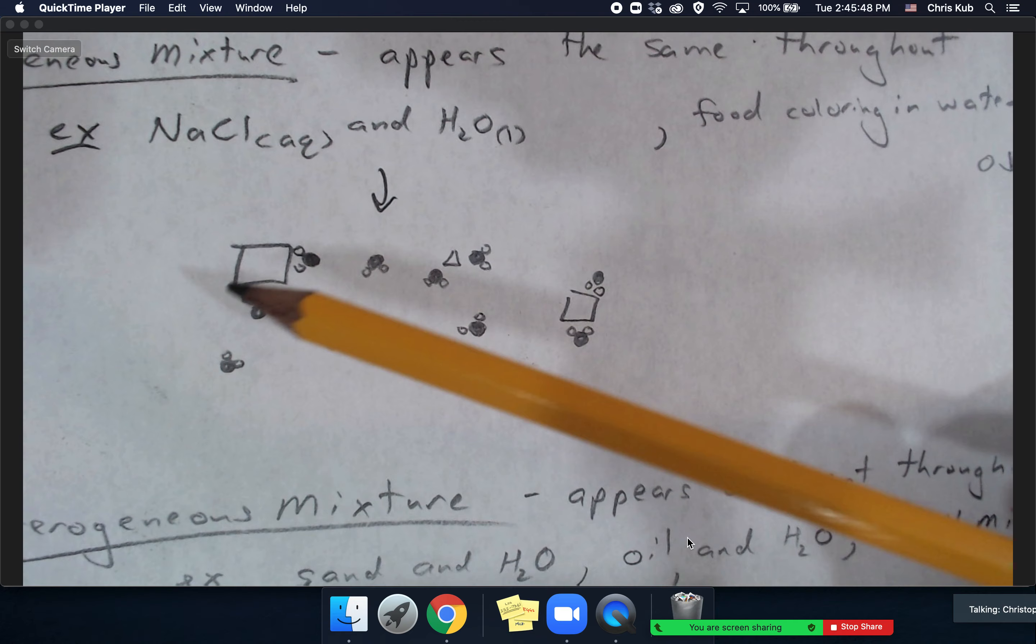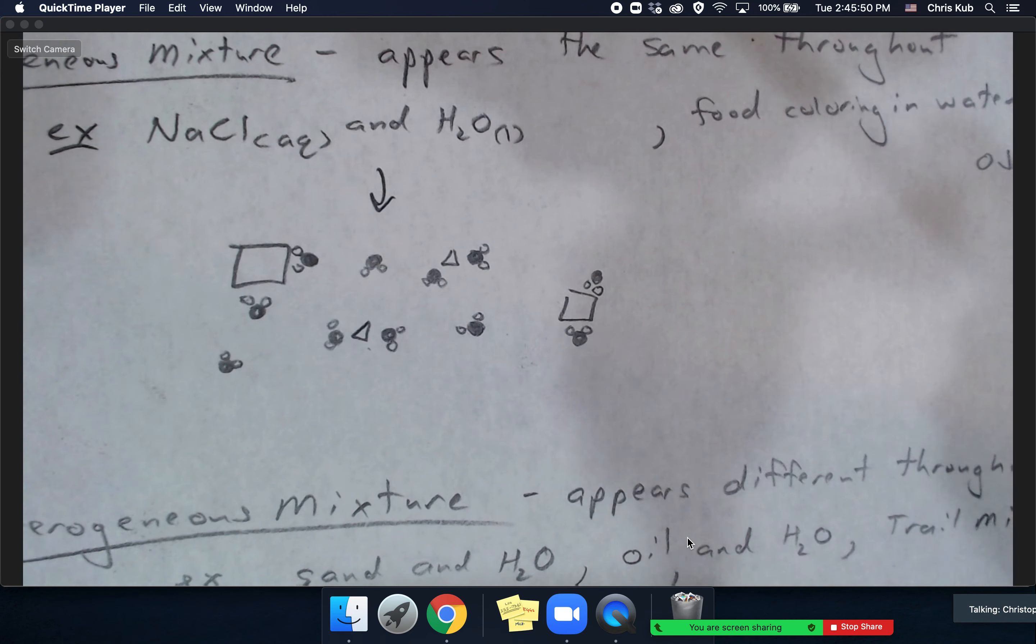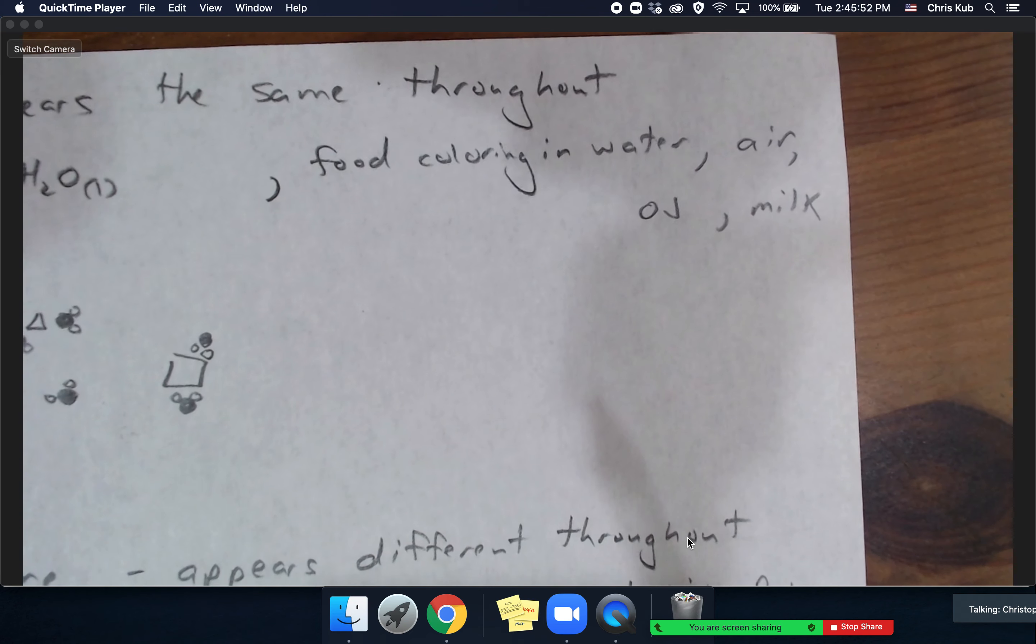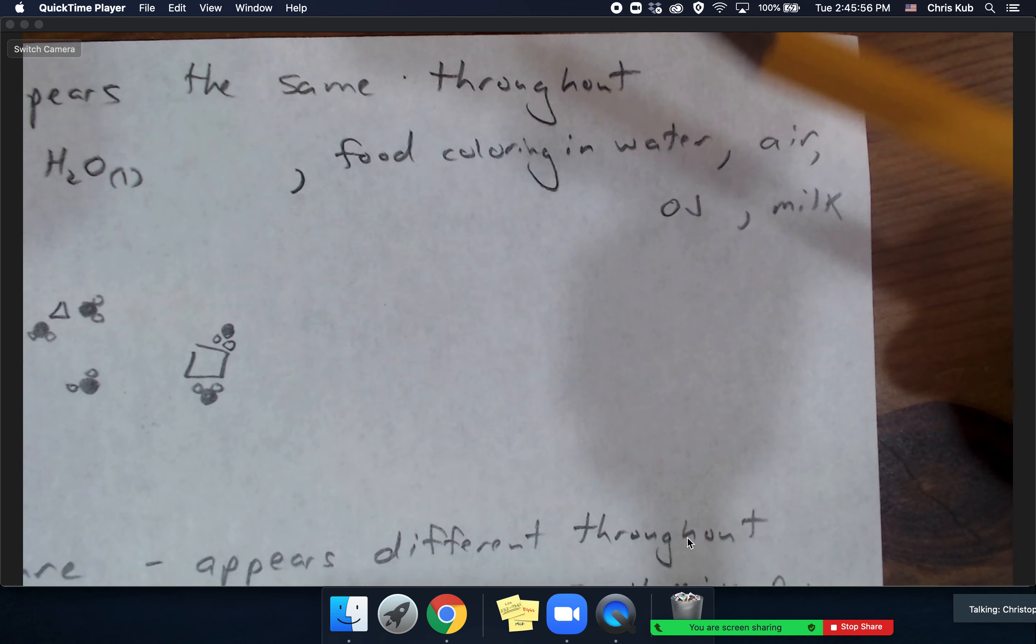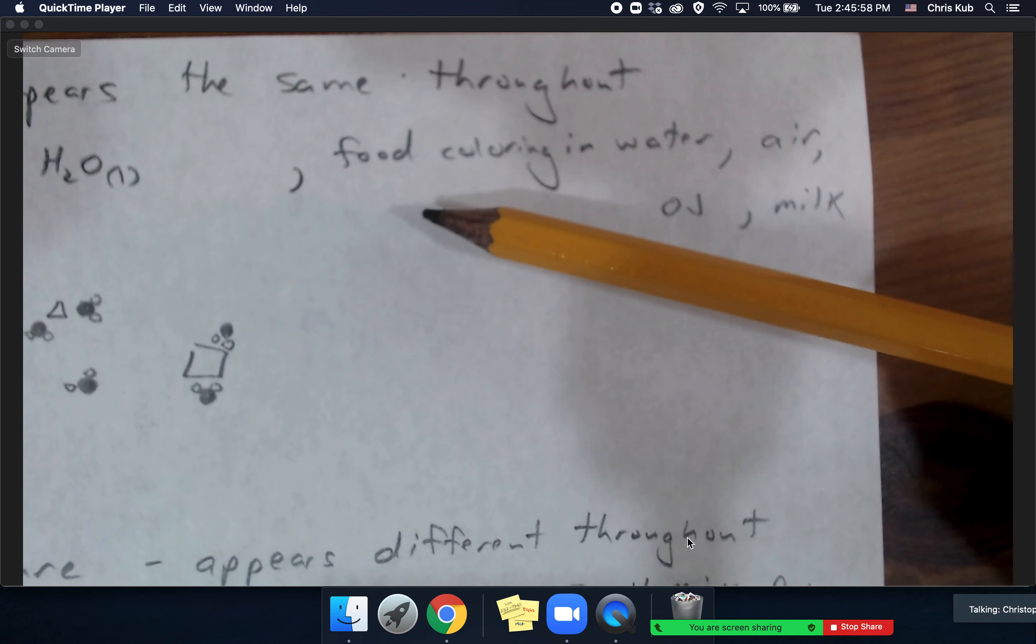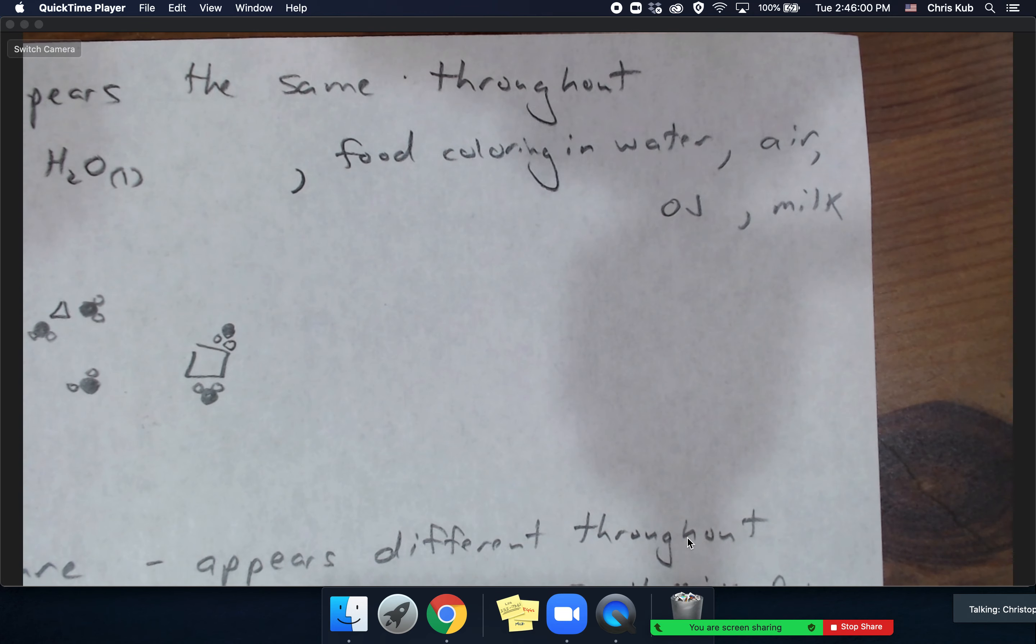Similarly, what else might be homogeneous? What else might look the same throughout the whole mixture? Food coloring dissolved in water, air looks the same everywhere even though it may not be a pure substance, orange juice if it's non-pulpy orange juice should look pretty much the same throughout, ditto milk. So these are some things that you should commit to memory for assessments.